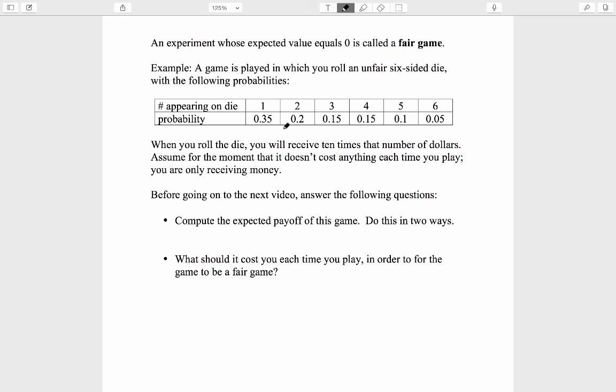Here is another piece of terminology. An experiment whose expected value equals 0 is called a fair game. Here is an example. A game is played in which you roll an unfair six-sided die with the following probabilities: 35% chance of a 1, 20% chance of a 2, 15% chance of a 3, etc.